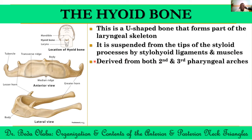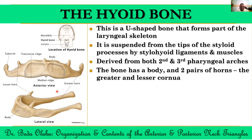Embryologically, the hyoid bone arises from two pharyngeal arches. The upper part of the body and the lesser horns — the small short projections — arise from the second pharyngeal arch. The lower part of the body and the greater horns — the longer, more posterior projections — arise from the third pharyngeal arch. So the hyoid bone has a body and two pairs of horns: the lesser horns above and the greater horns inferiorly and more posterior.